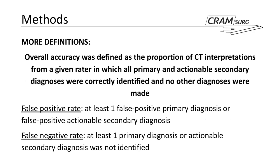Overall accuracy is defined as the proportion of CT interpretations from a given rater in which all primary and actionable secondary diagnoses are correctly identified, and no false diagnoses are made. A radiologist's report on a non-contrast CT needs to match the contrast CT report for both the primary and secondary diagnoses. The false positive rate is when the radiologist makes at least one false positive primary or actionable secondary diagnosis. The false negative rate is equally demanding — all primary and secondary diagnoses must be correct.